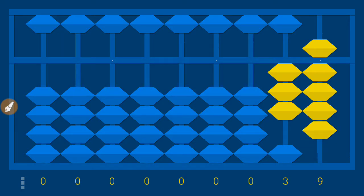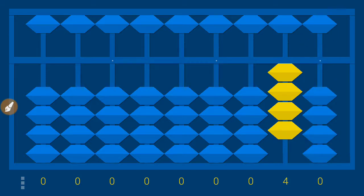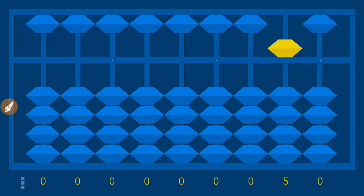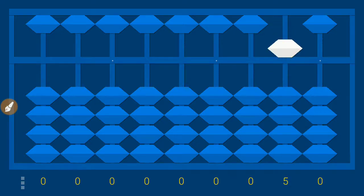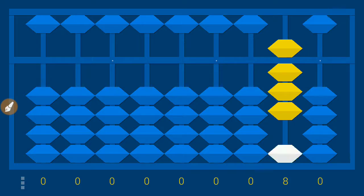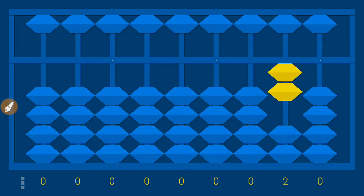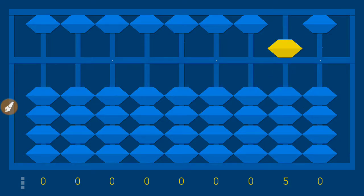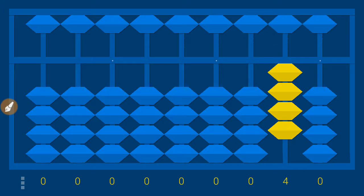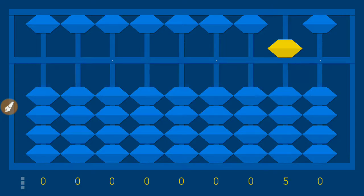For 40, move one bead up and subtract nine — it becomes 40. For 50, put the lower tens beads down and use the upper tens bead — it becomes 50. Then 60, 70, 80, 90 follow the same pattern. The upper tens bead adds 50, so combined with lower tens beads you get 60, 70, 80, 90. That covers counting up to 90. Thank you for subscribing.